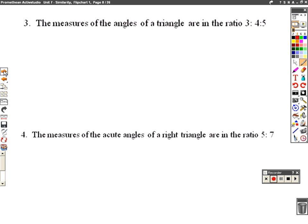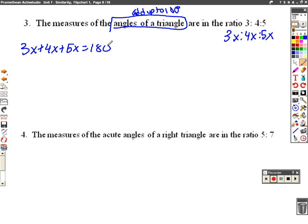Alright, next page. The measures of the angles of a triangle are in the ratio of 3 to 4 to 5. Let's put back in the thing that we canceled out, the 3x to 4x to 5x. And we know that the angles of a triangle, what do we know about them? Well, they, once again, add up to 180 degrees.